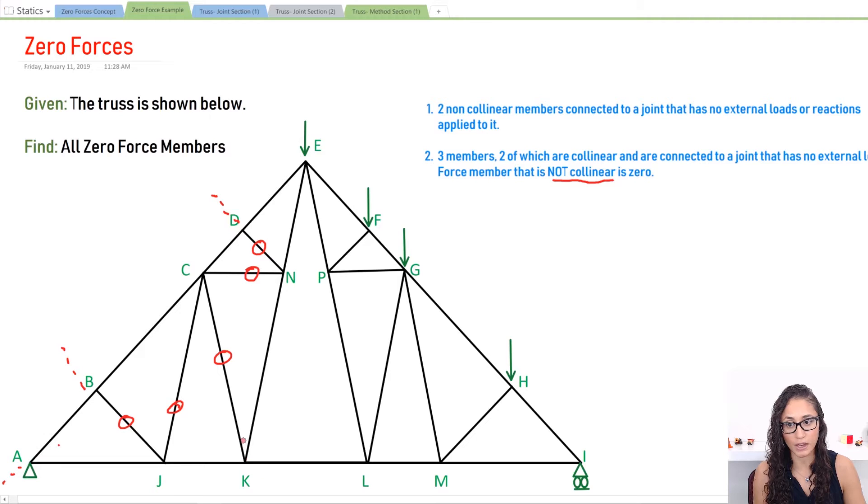Now let's look at K. I have CK is zero, so I have three members left: JK, KL, and KN. Now KN is non-collinear, so KN is going to be zero. Now for the last member, let's look at N. At N, I have no external forces, I have no external loads. We identified CN to be zero, DN zero, and KN is zero. So NE is going to be zero because there are no loads here, and to reach equilibrium, NE is just going to be zero.